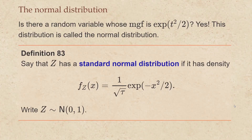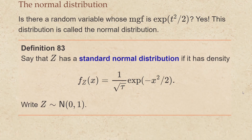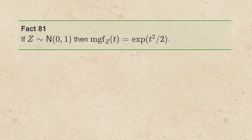Is there a random variable whose moment generating function is the exponential function applied to t squared over 2? Yes, and this distribution is called the normal distribution. We're going to say that z has a standard normal distribution if it has density 1 over the square root of tau times the exponential function at minus x squared over 2, and we're going to write z is normally distributed — the N stands for normal — with parameters 0 (that's the mean) and 1 (that's the variance). Note that tau here is the full circle constant; it equals 2 times pi where pi is the half circle constant. One can easily check from that density that if we have a standard normal random variable, then the moment generating function of that random variable is e to the t squared over 2.